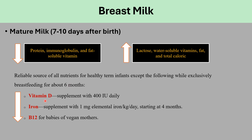If there is no formula, the exclusively breastfed baby will need vitamin D and iron. Vitamin D starts from birth at 400 international units daily. Iron starts at 4 months — you can start earlier in preterm infants. The dose is 1 milligram elemental iron per kilo per day once a day. For preterm infants, if the dose is too much, you can divide it to twice a day.